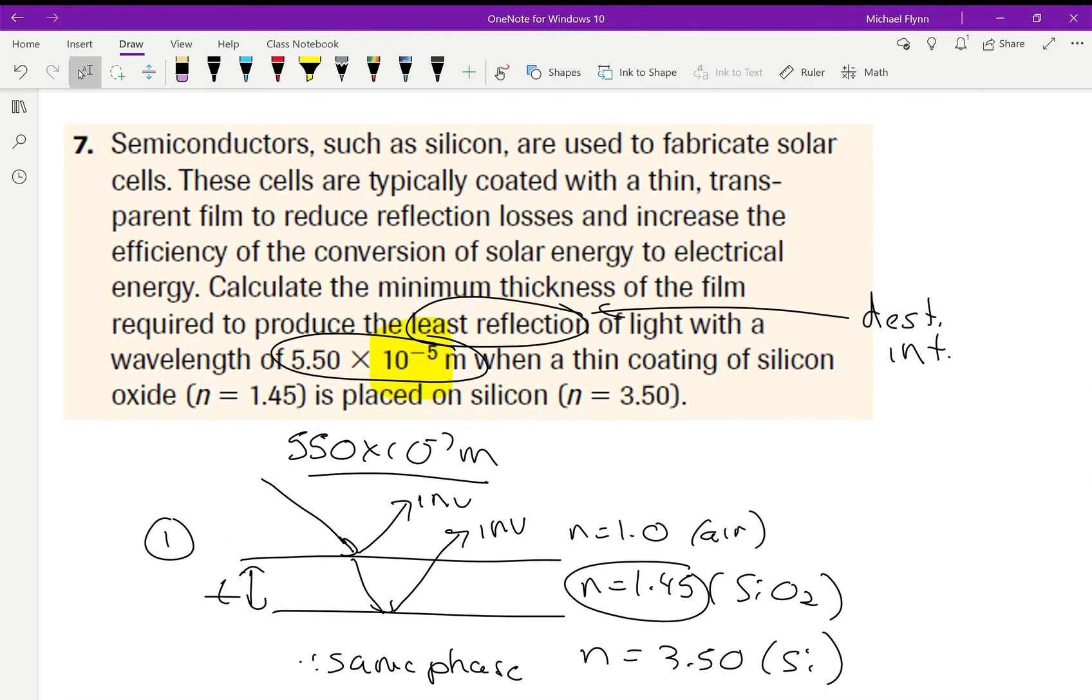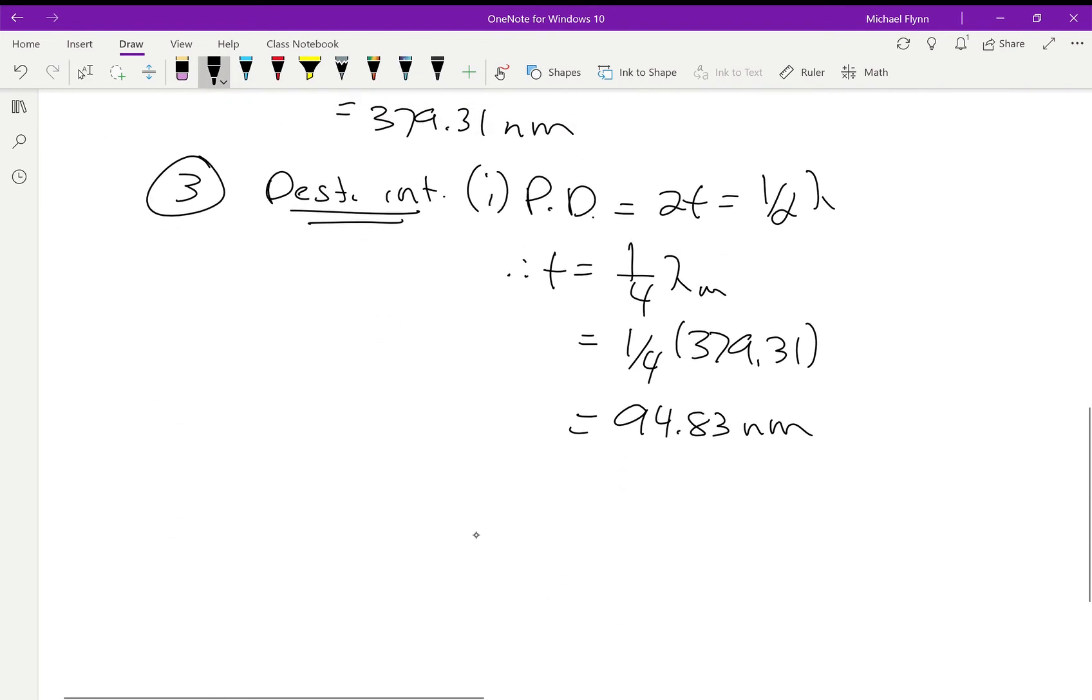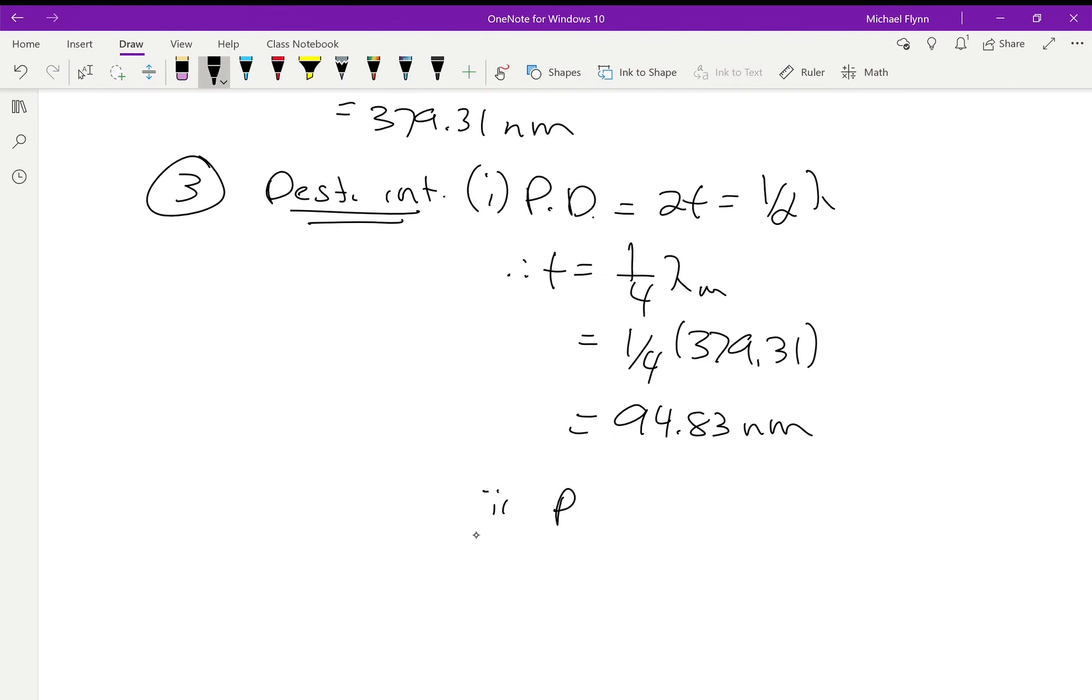Is that all they want? The minimum thickness. Yeah. Now, we could find other thicknesses, like we could do case two, if the path difference was equal to 2t equals three halves of a wavelength, but what you would find is this is the smallest one. And so, we can ignore that one.